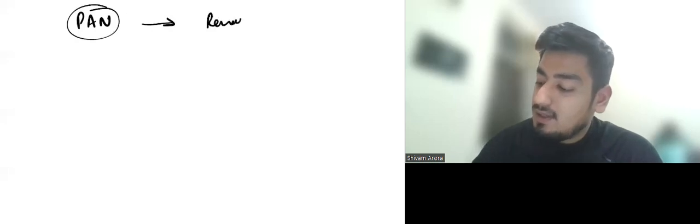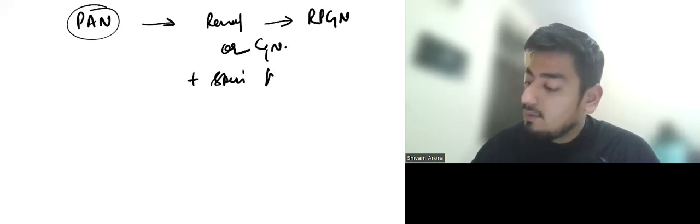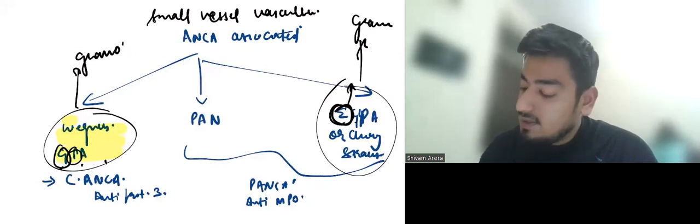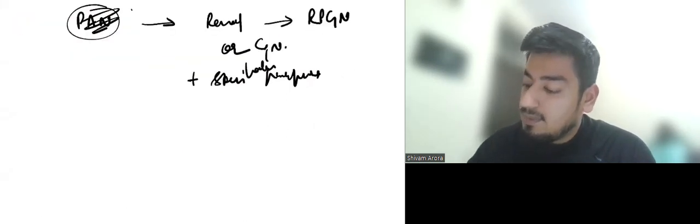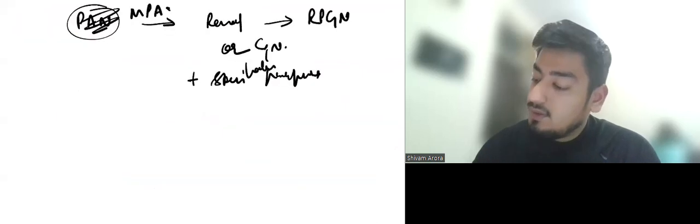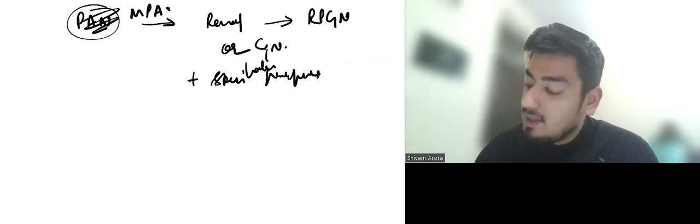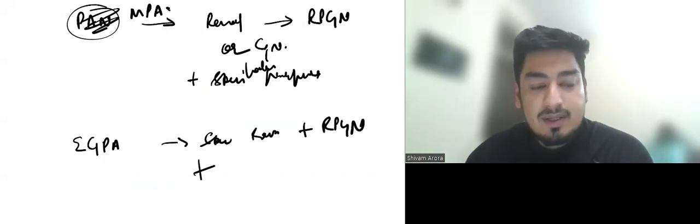For MPA again renal involvement in the form of RPGN or glomerulonephritis is seen plus skin purpura, palpable skin purpura is seen. So palpable skin purpura is a feature of small vessel vasculitis. It is seen in Wegener's, it is seen in MPA which is microscopic polyangiitis, it is seen in GPA and it is seen in EGPA. So palpable purpura in skin is seen in all three. Then in EGPA again skin rash plus RPGN plus one important thing here is allergic symptoms.